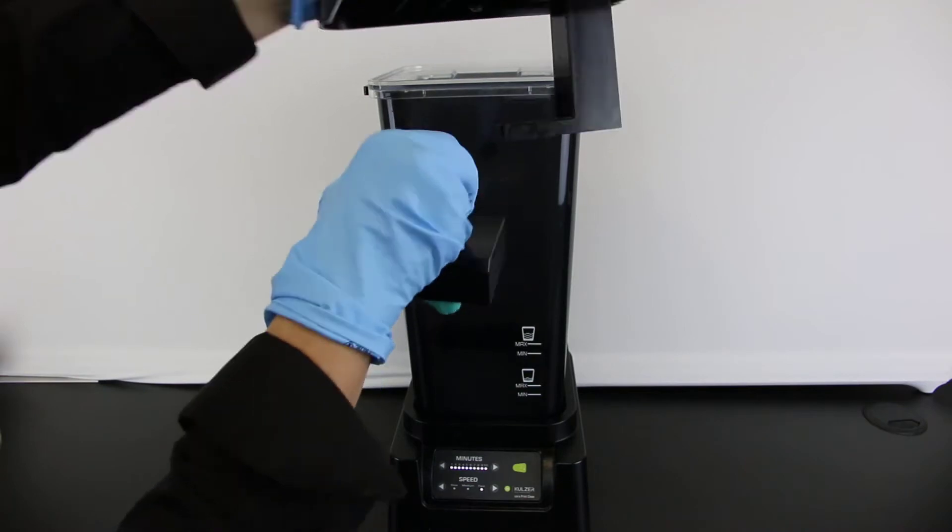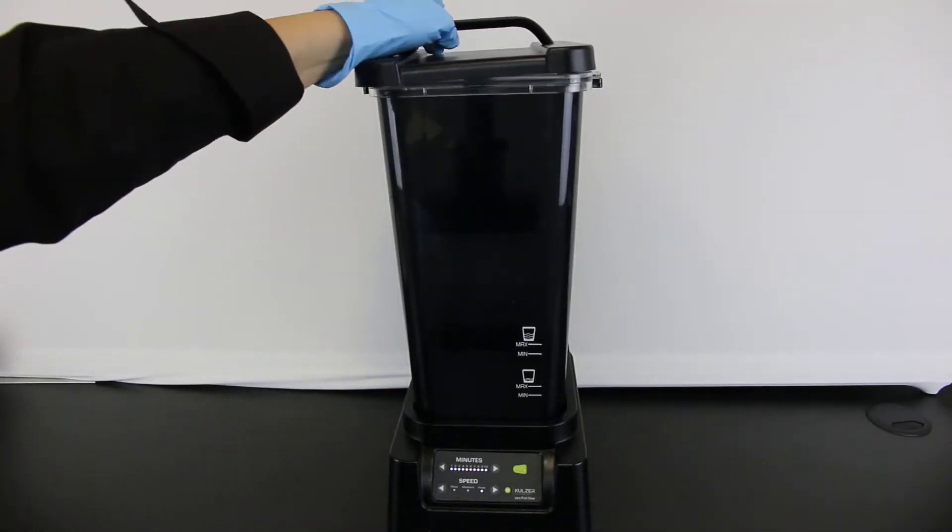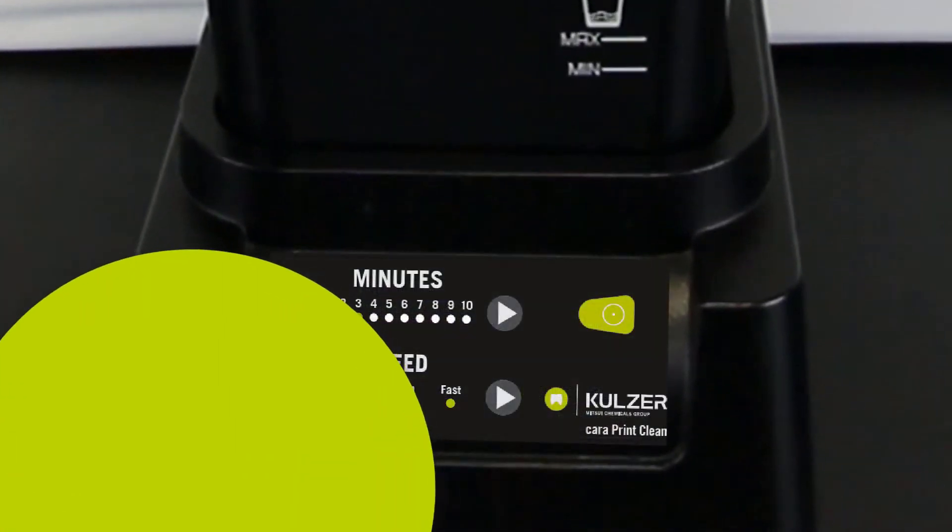Screw the printed object on the printing platform onto the large spacer in the lid of cara print clean. Start the first cleaning for three minutes.